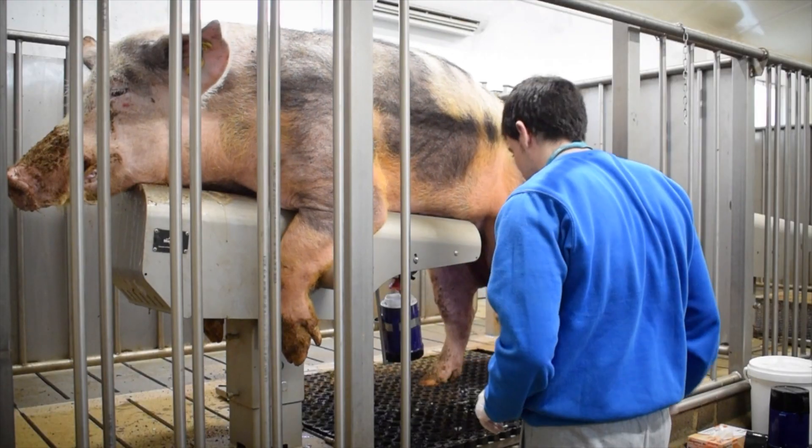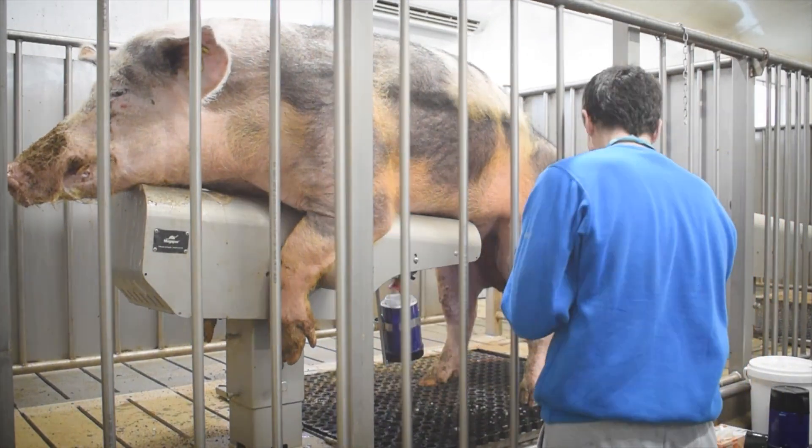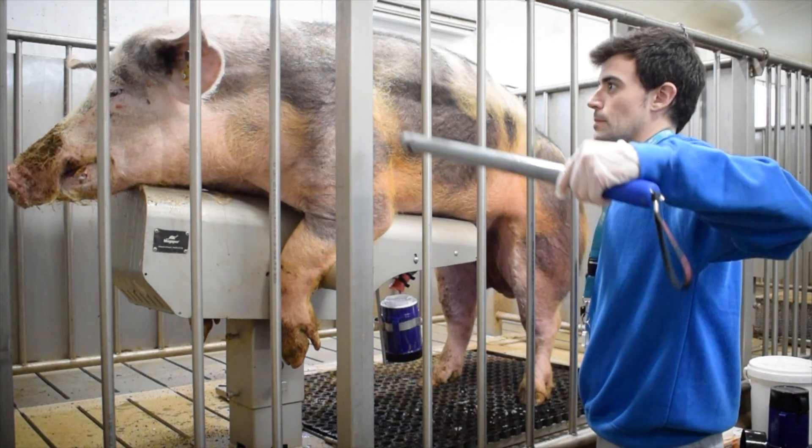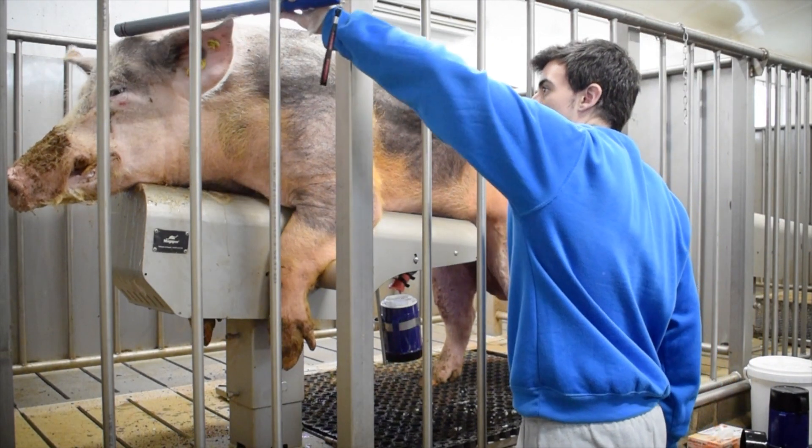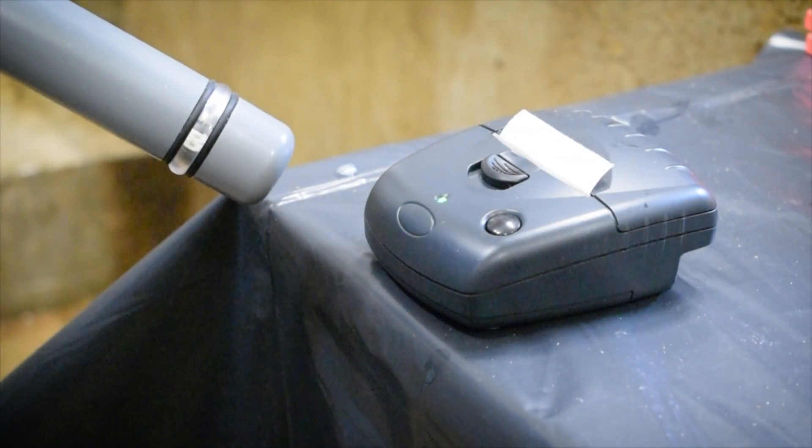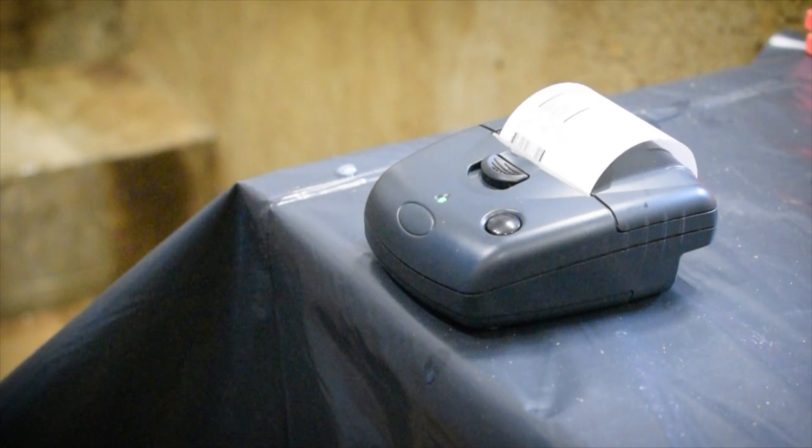With the GSP traceability system, the ejaculate is identified. The RFID technology reader allows the identification of the boar, the operator, the date, and the time in a fast and safe way. A Bluetooth printer prints the identification sticker.